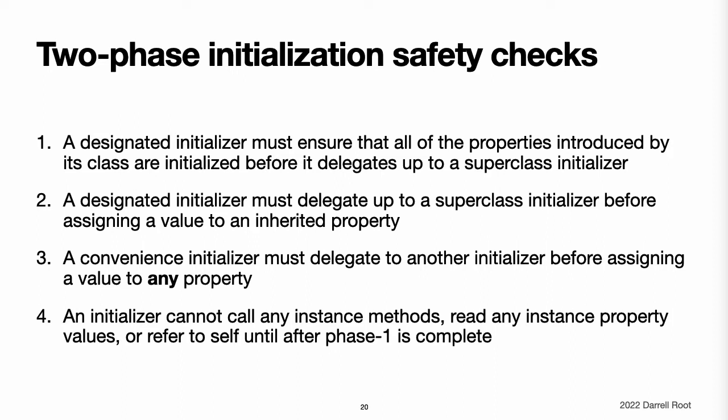Swift's compiler performs four helpful safety checks to make sure that two-phase initialization is completed without error. Safety check 1: a designated initializer must ensure that all of the properties introduced by its class are initialized before it delegates up to a superclass initializer. The memory for an object is only considered fully initialized once the initial state of all of its stored properties is known. Therefore, a designated initializer must make sure that all of its own properties are initialized before it hands off up the chain.